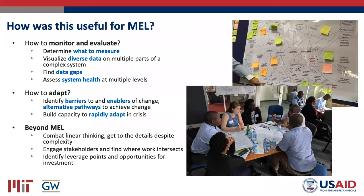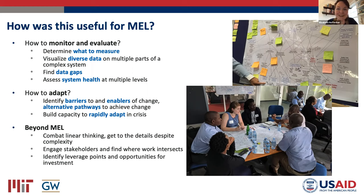Workshops can be used for theory of change validation as well. There's a process called outcome evidencing that we're currently using in a Gates-funded project in India, where we're taking an initial complexity-aware theory of change, and then doing six-month after-action reviews in workshops — using the theory of change as what's getting validated. What would we hypothesize seeing, and then are we seeing that? Are we not? And do we need to adjust the theory of change based on emergent outcomes that the project is observing?